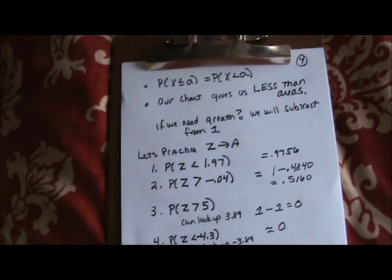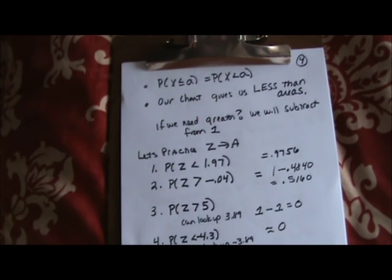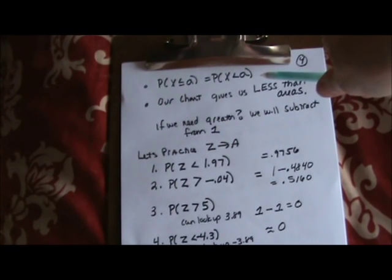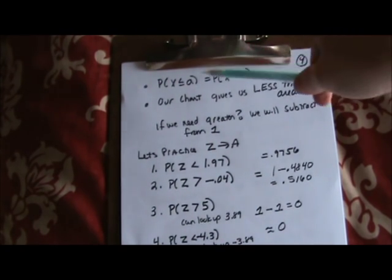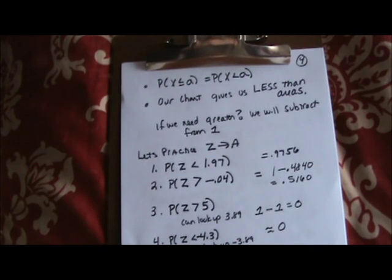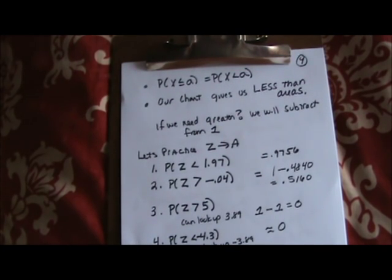A few other notes: very unlike handout eight probability, where the words 'at least' or 'more than' made a big difference, the normal distribution is a continuous curve where every possible decimal is possible — so we really don't care about strict vs. non-strict inequalities. Less than or equal to some number is the same as less than that number.